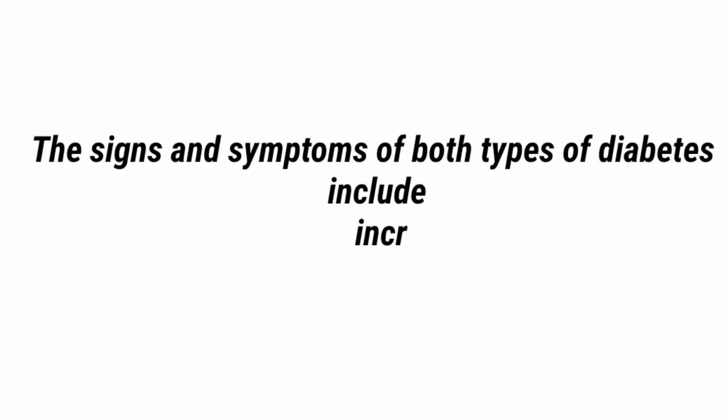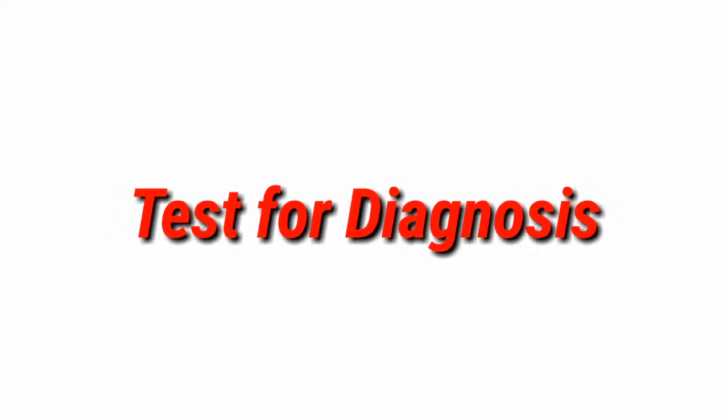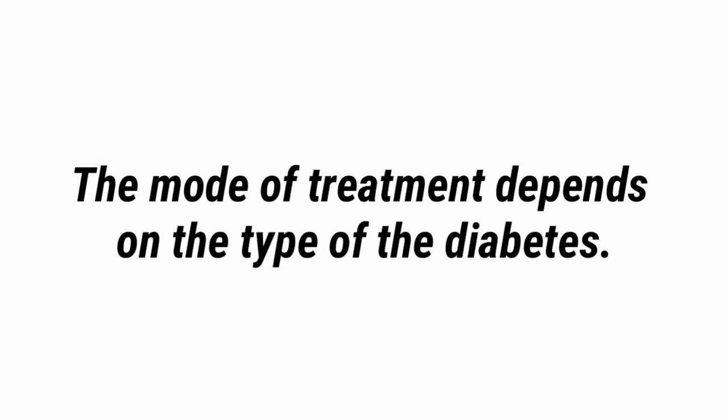The signs and symptoms of both types of diabetes include increased urine output, decreased appetite, and fatigue. Tests for the diagnosis of diabetes include fasting blood sugar, random blood sugar, and HbA1c. Treatment of diabetes depends on the type of diabetes.